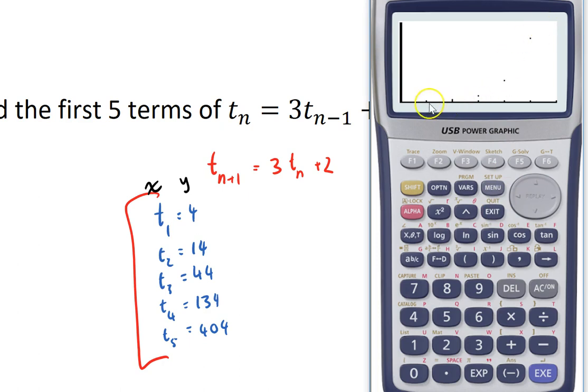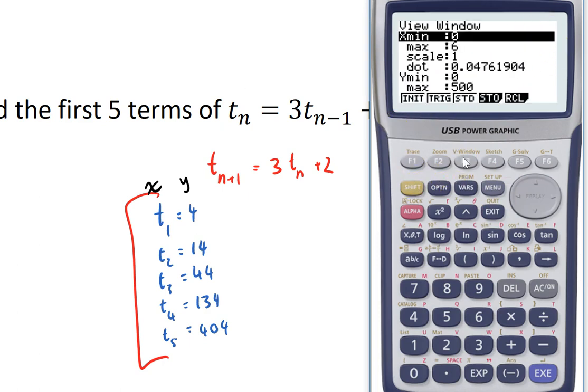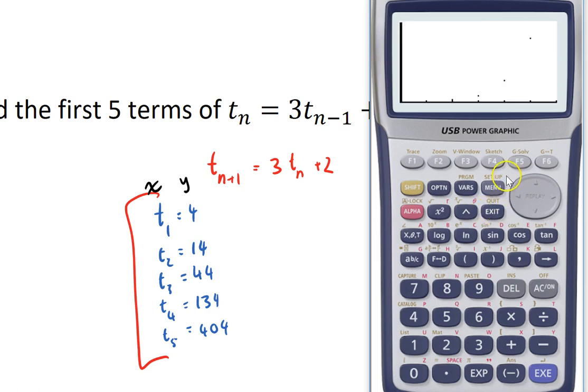You might not be able to see that if you try it on your calculator. If you can't, you just need to change the view window so that your X minimum is 0, your X maximum is 6, your Y minimum is 0, and your Y maximum is about 500. And then just exit out of there. You can also do a G con, which just joins up those dots with lines. And you can see this is going to start getting steeper and steeper and steeper as we go along.